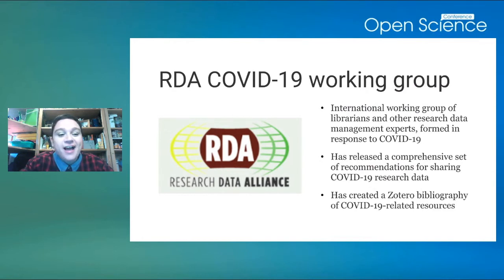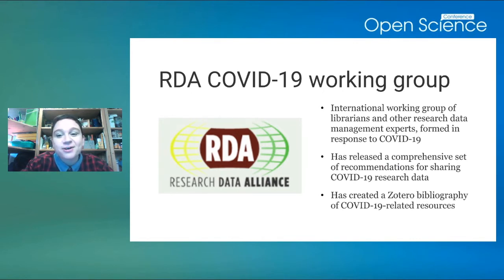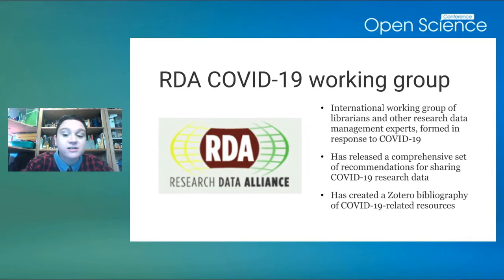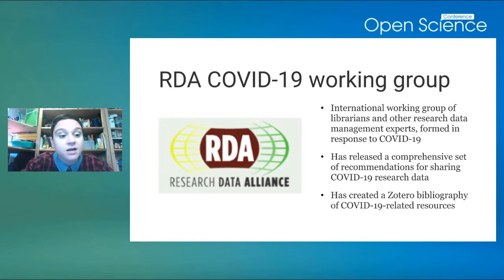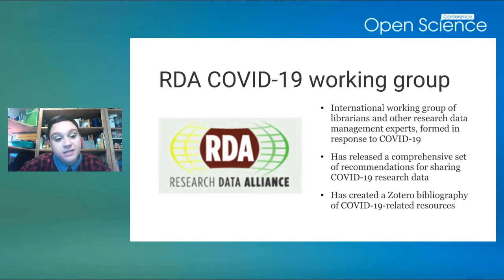An example of how this work is being done: the RDA COVID-19 working group, that's the Research Data Alliance. They have an international working group of librarians and other research data management experts formed in response to COVID-19. They've released a comprehensive set of recommendations for sharing COVID-19 research data and a Zotero bibliography of COVID-19 related resources. This is the kind of support work that is really helpful to those on the ground doing the work and sharing the data.